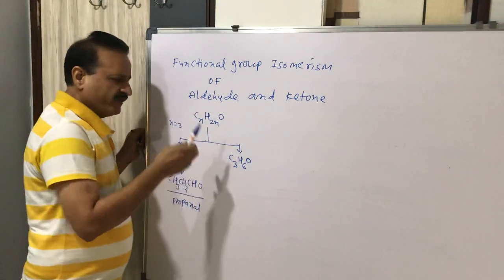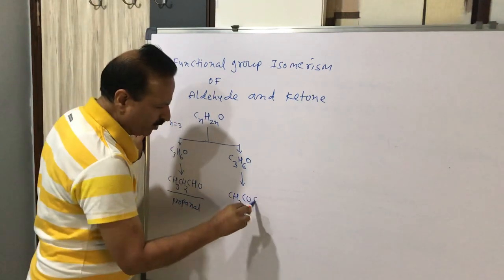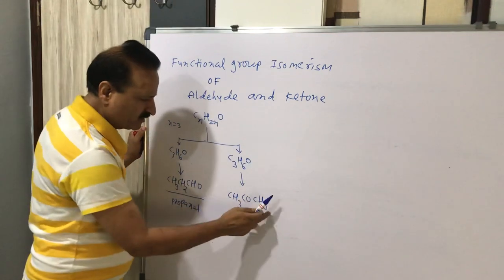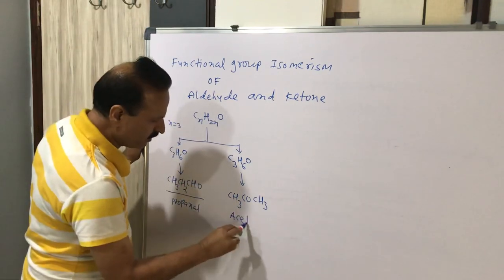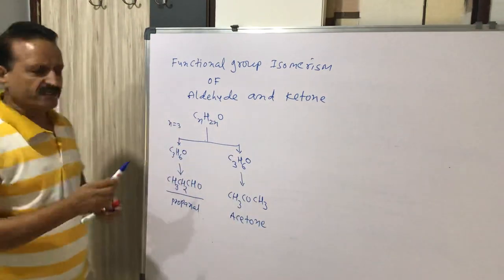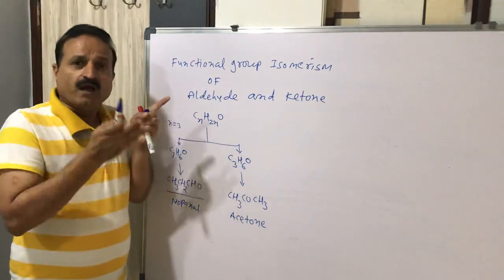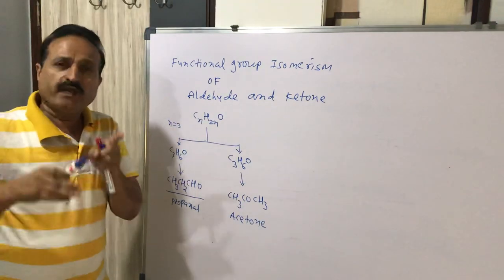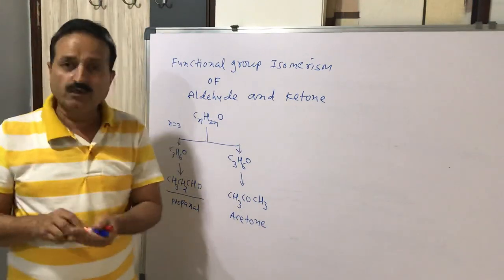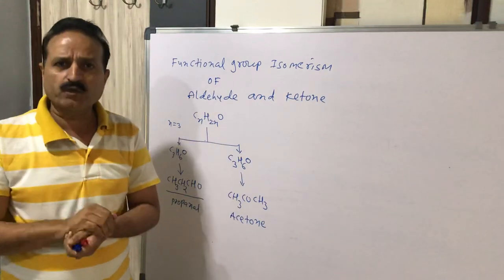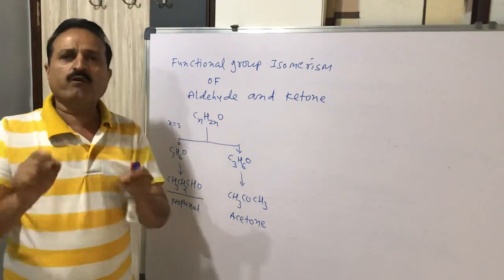Same way, from C₃H₆O we can prepare a ketone — that is CH₃COCH₃, meaning carbon 3, hydrogen 6, and oxygen 1. The name of this compound is acetone. Acetone is the common name and its IUPAC name is propan-2-one. This proves that aldehydes and ketones are functional group isomers of each other because their common molecular formula is the same but the functional groups are different.